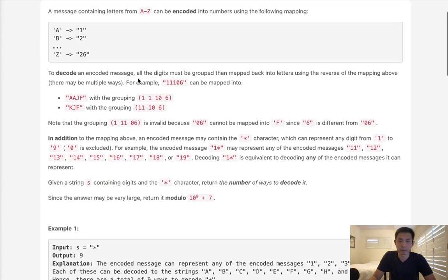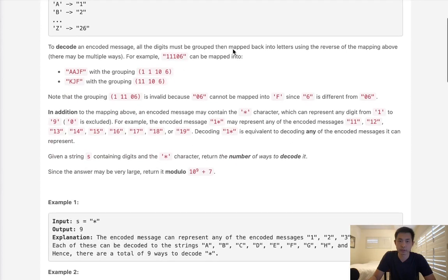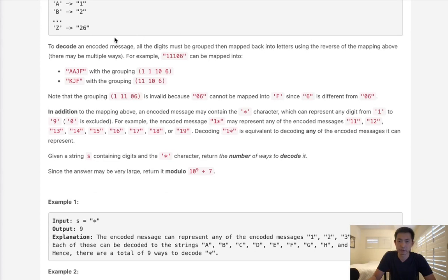To decode an encoded message, all the digits must be grouped then mapped back into letters using the reverse of the mapping above. So AAJF with a grouping of 1, 1, 10, 6 and KJF with 11, 10, 6. Notice how this string can be mapped two different ways.